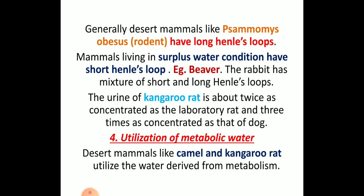Rodent-type mammals have long Henle's loops while some have short Henle's loops. The urine of the kangaroo rat is twice as concentrated as that of the laboratory rat and three times as concentrated as that of the dog — showing how concentrated the urine is and how little urine is secreted. This is an example of overcoming a hypoosmotic condition.